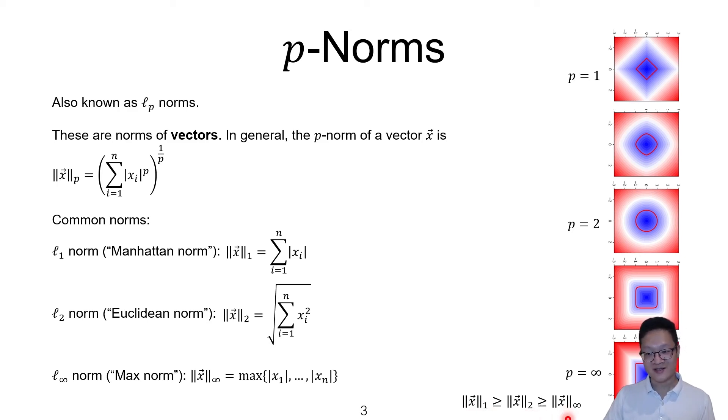The way you can see that is if you imagine overlaying all of these plots on top of each other, you will see that some, for example, if we compare the 2-norm to the 1-norm, some of the points which have a 2-norm of 1, let's say this point, would actually lie outside of the diamond, meaning that this point would actually have a 1-norm that is greater than 1.